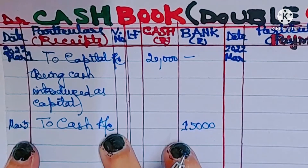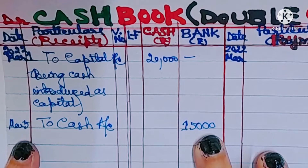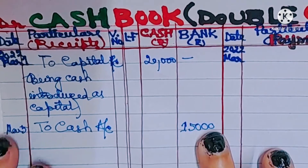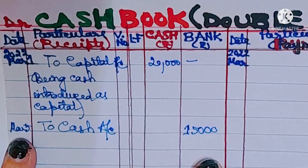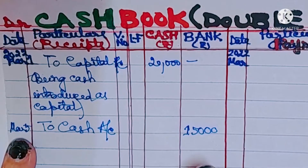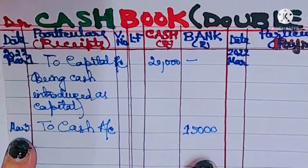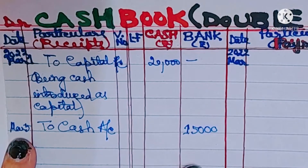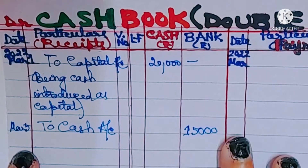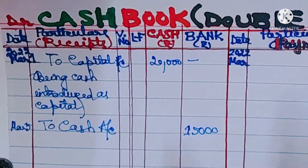Since we have written 'cash account,' we write 15,000 in the bank column, not the cash column. The logic: bank column represents bank account, which is a personal account. According to personal account rule, the receiver of the benefit is debited. When cash is deposited into the bank, the bank is the receiver of cash, and bank balance increases. So 15,000 will be debited in the bank column.